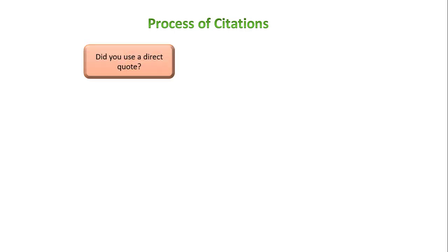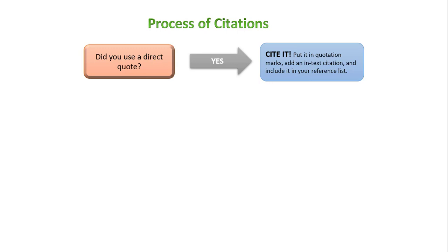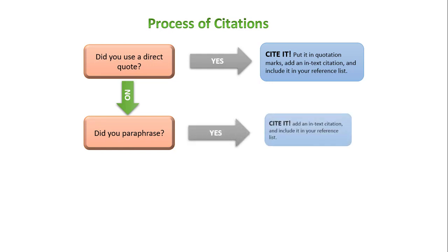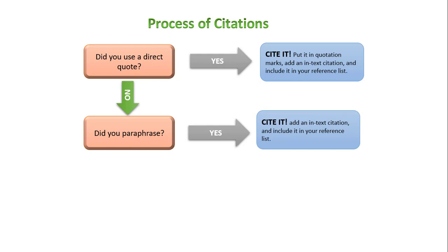Now I'll talk about why we need citations. If you use a direct quote — if you take someone else's sentence or quotation — you need to cite it: put it in quotation marks, add an in-text citation, and include it in your reference list. What if you did not use a direct quote and you paraphrase someone else's idea? You still need a citation, because if you paraphrase it, it's not your idea — it's someone else's information that you have paraphrased in your paper. So you also need to cite it.